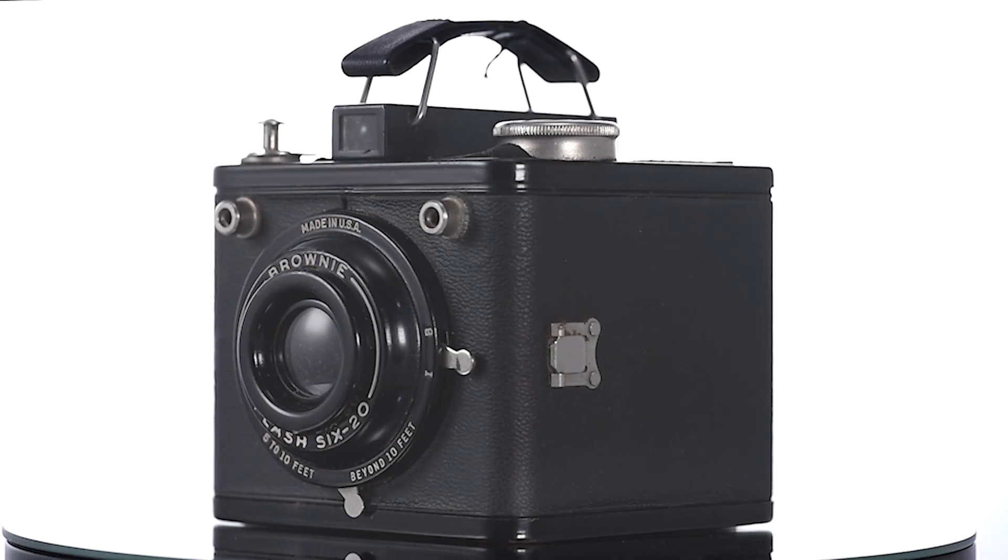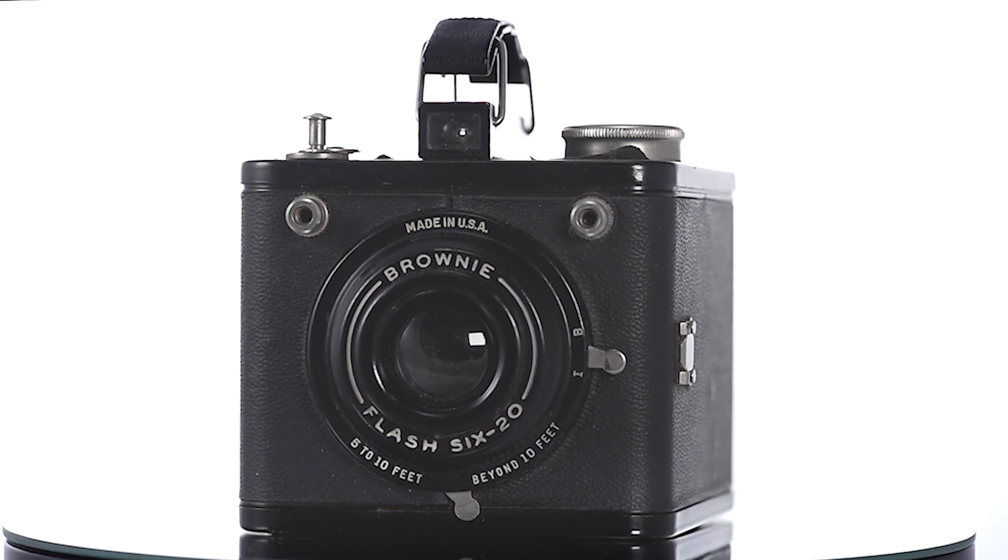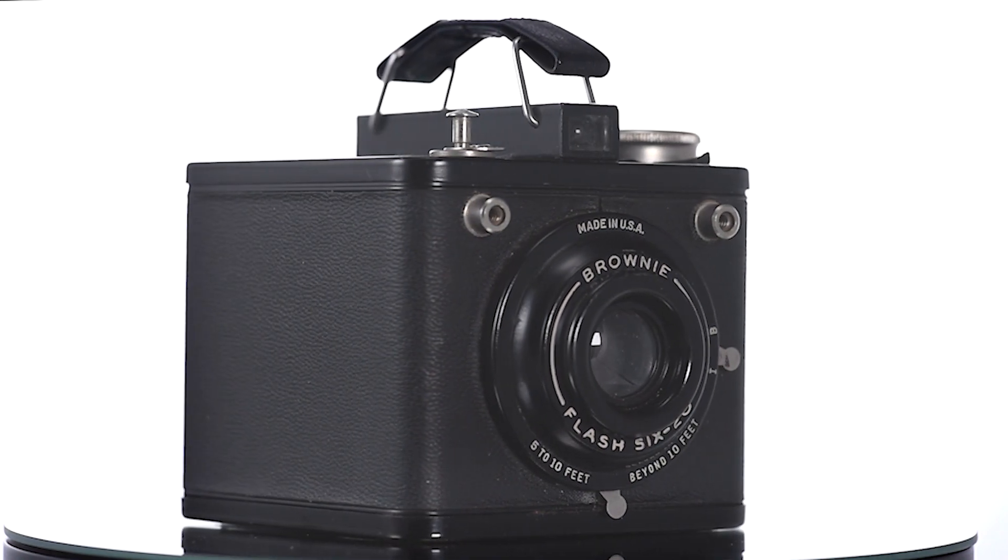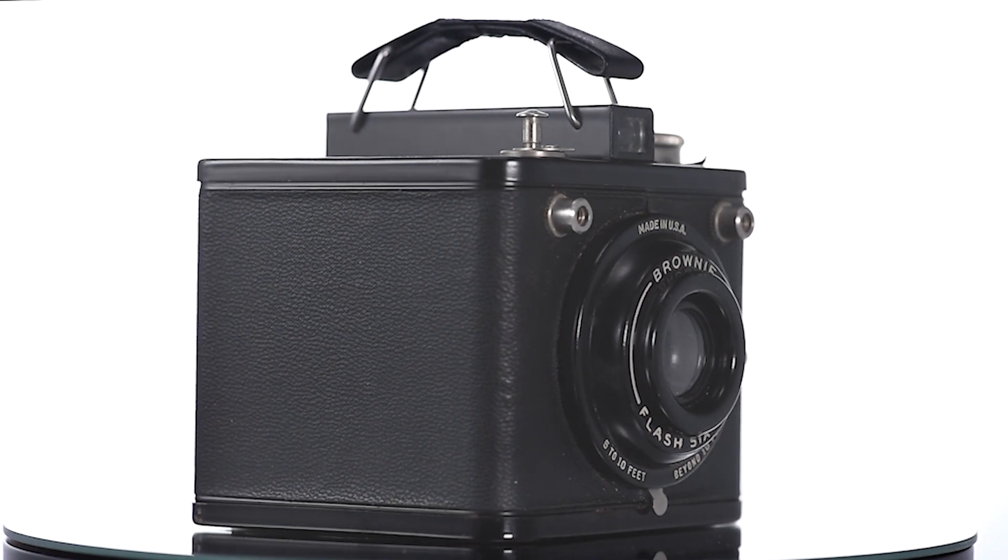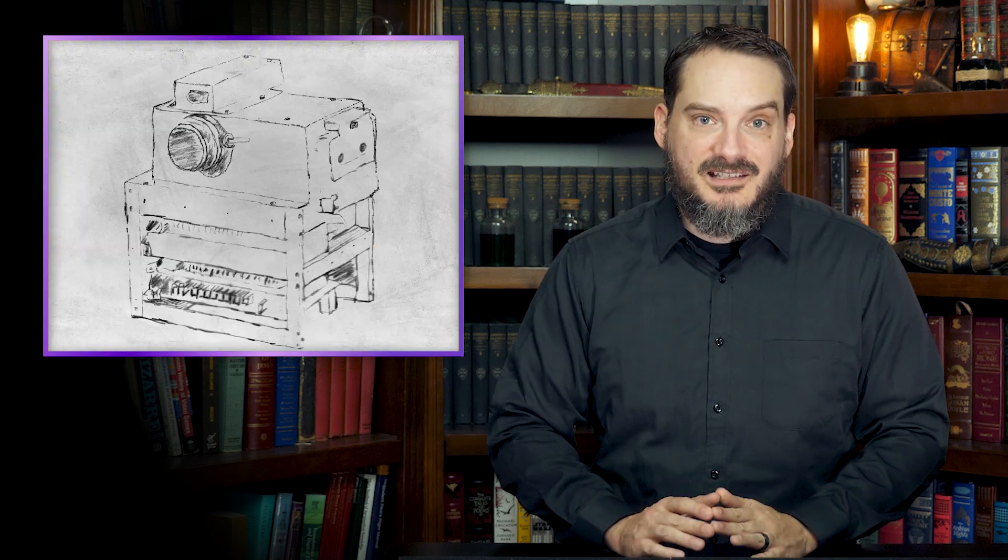Kodak introduced such groundbreaking technologies as the Brownie personal camera, Kodachrome color film, and Super 8 home movie film. It was thus perfectly poised to launch the digital image revolution. And so it was that in December of 1975, Kodak engineer Steve Sasson was experimenting with CCDs, and by combining one with various components scrounged from around his laboratory, he created the first self-contained digital camera system.